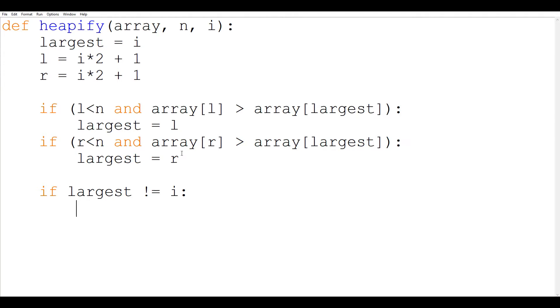So array of largest comma array of i is equal to array of i comma array of largest. So array of largest is going to store the value of array of i and array of i is going to store the value of array of largest. So easy swapping.